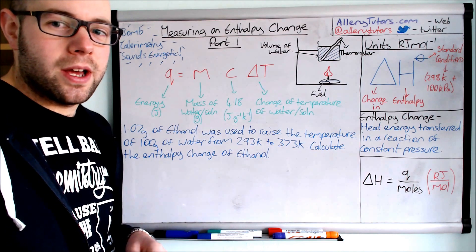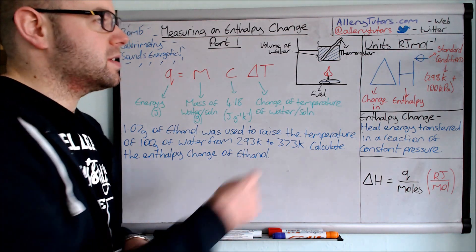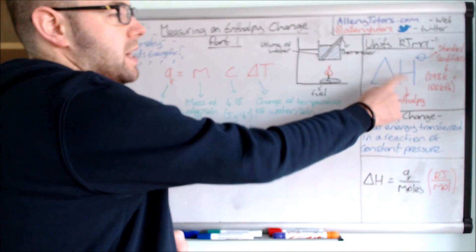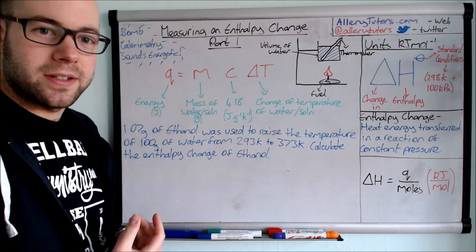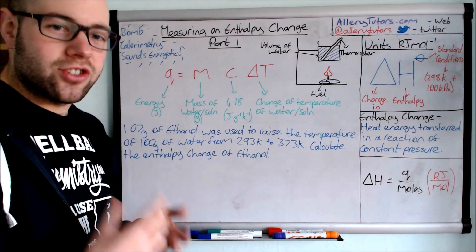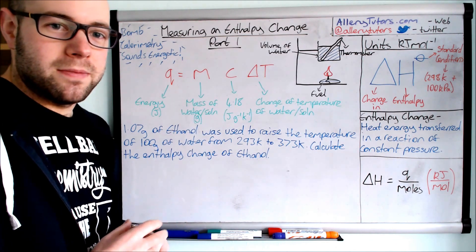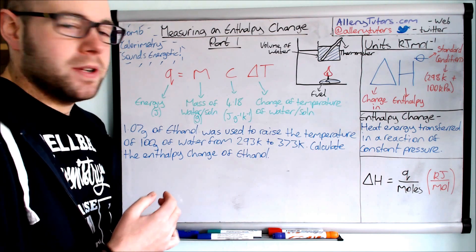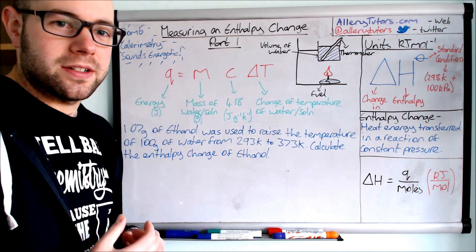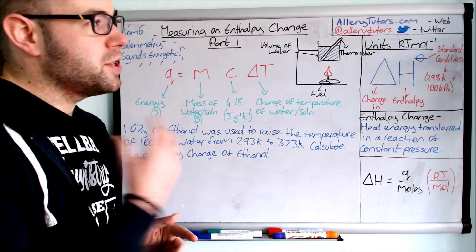We're going to start by looking at what enthalpy actually is. Enthalpy is given the symbol delta H, delta meaning a change in H standing for enthalpy, and we've also got the little naught symbol at the top right hand corner which basically means everything's done in standard conditions.